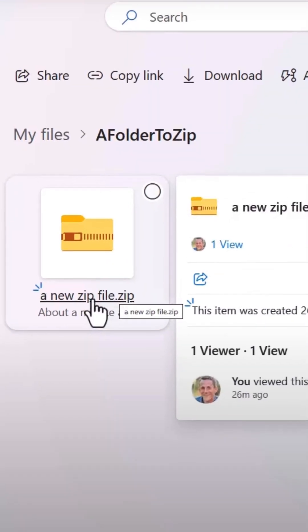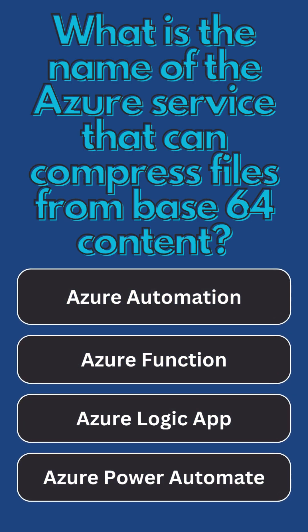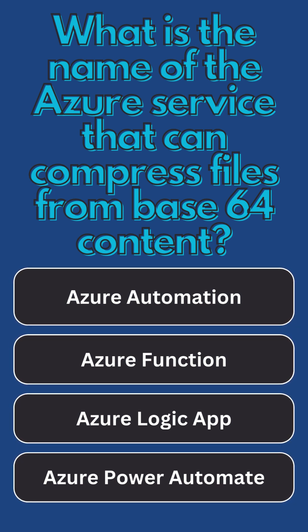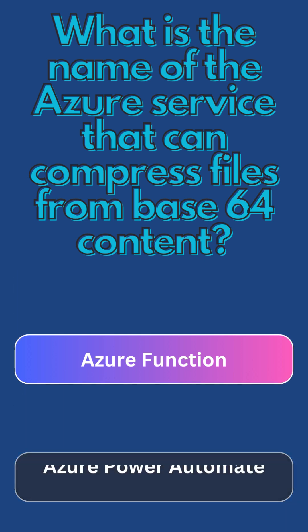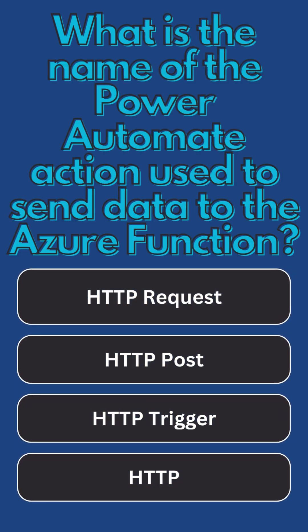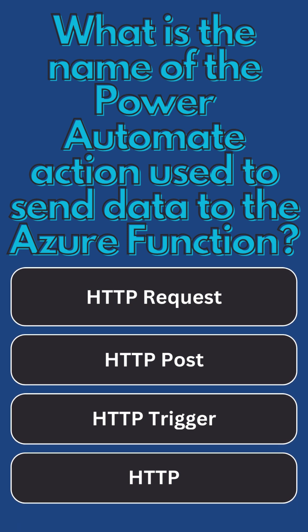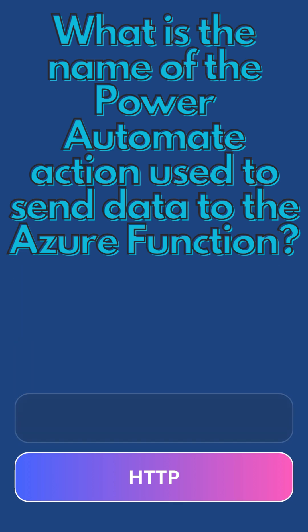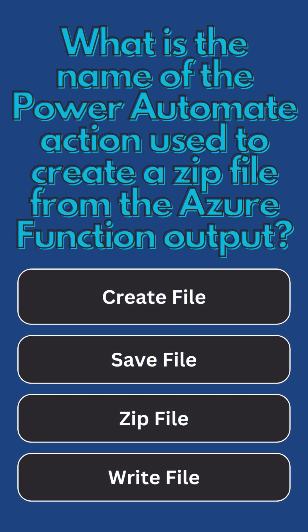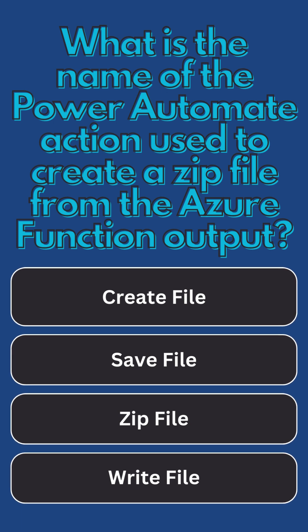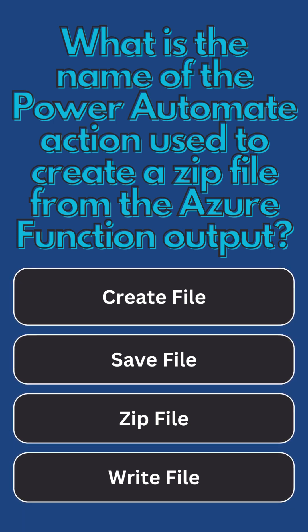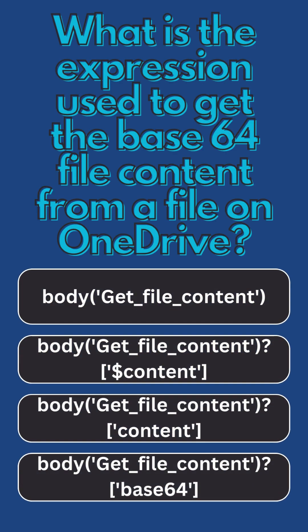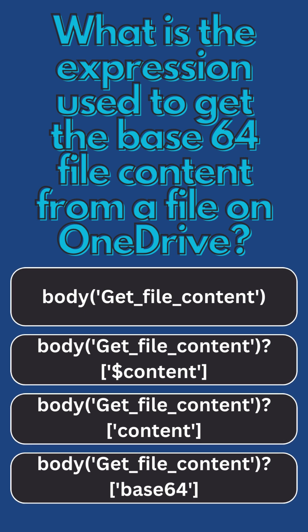Now let's have a quiz. What is the name of the Azure service that can compress files from Base64 content? What is the name of the Power Automate action used to send data to the Azure function? What is the name of the Power Automate action used to create a zip file from the Azure function output? What is the expression used to get the Base64 file content from a file on OneDrive?